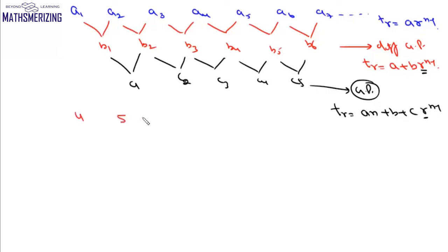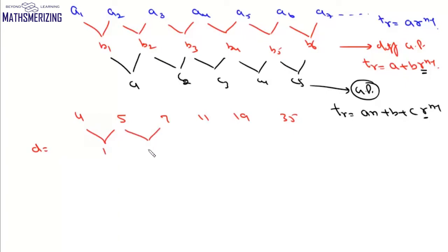Let us take an example. Suppose we are given the sequence 4, 5, 7, 11, 19, 35. This is neither an AP nor a GP. We find its differences: 1, 2, 4, 8, 16. This difference is in GP.